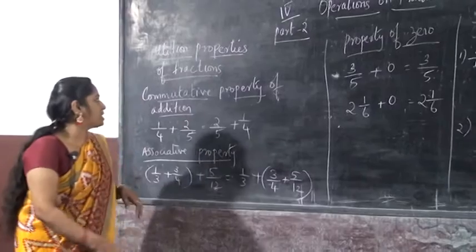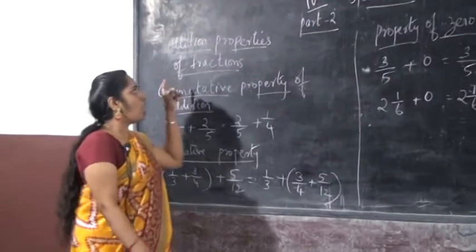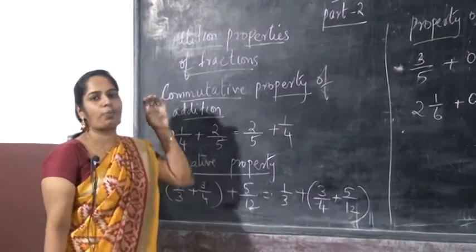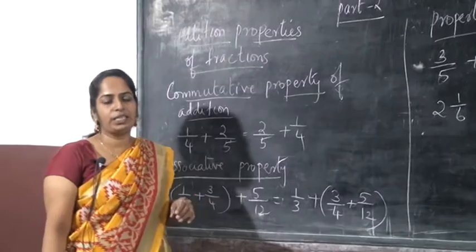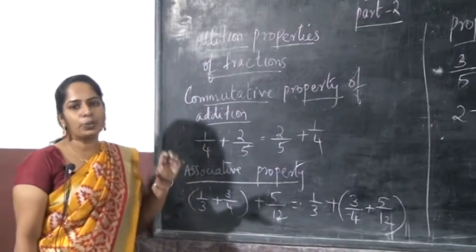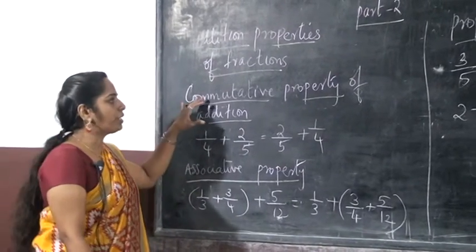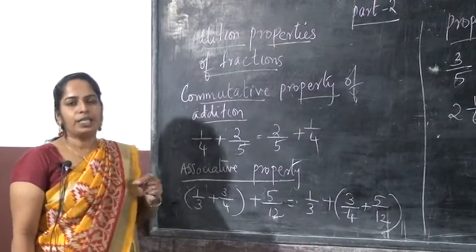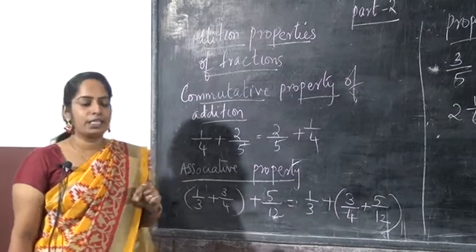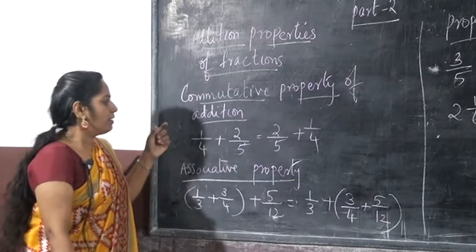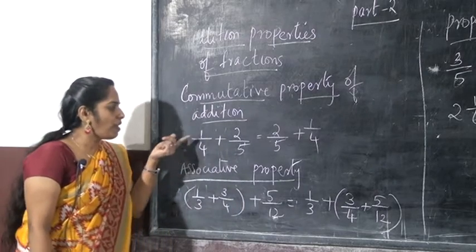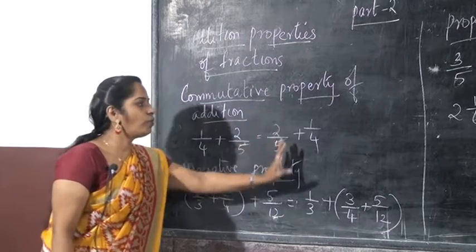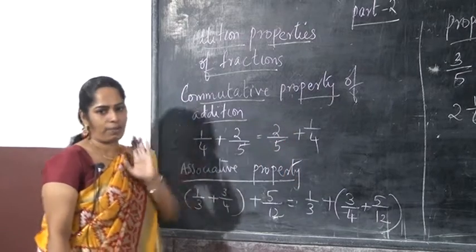Now we can look at addition properties of fractions. What is the addition properties of fraction? The first is the commutative property of addition. Here we have: 1/4 plus 2/5 is equal to 2/5 plus 1/4.